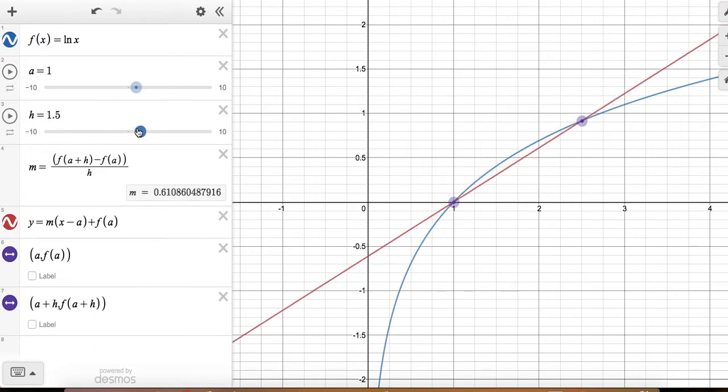So notice that as we bring that point closer together, we can see the slope value changing, and that slope value is getting closer and closer to 1, but it's right at that point, it's undefined because we have a 0 over 0. So we can see the limit is looking like it's approaching 1.